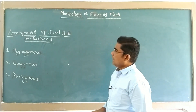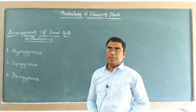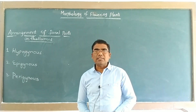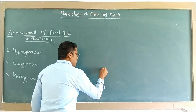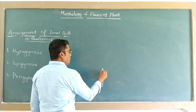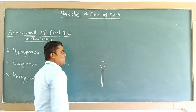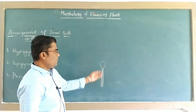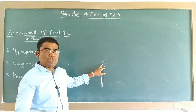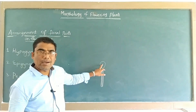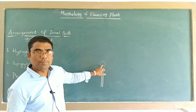Here, in this topic, we are discussing about the arrangement of floral parts on the thalamus. What is the thalamus? See here — this is the pedicel. The stalk of the flower is called the pedicel. The terminal position of the pedicel becomes expanded and flat. This expanded structure provides the place for the attachment and arrangement of floral parts. This part is called the thalamus.